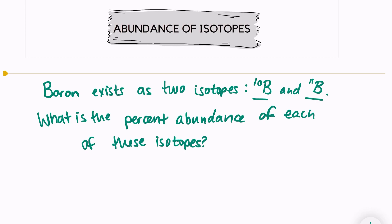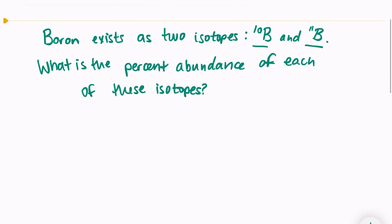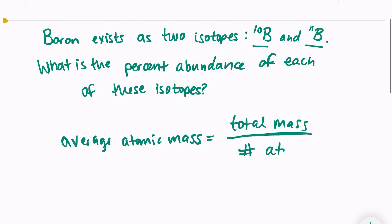So we're going to use our formula: average atomic mass is equal to the total mass over the total number of atoms that we're looking at.